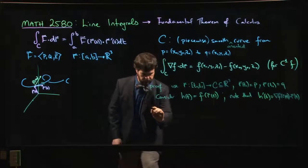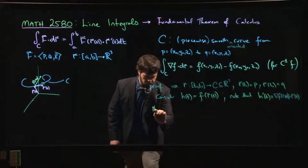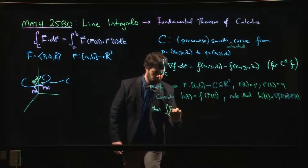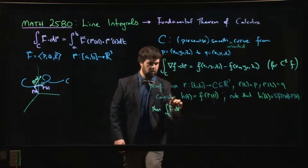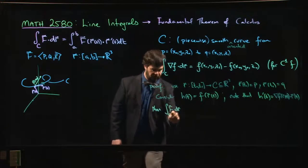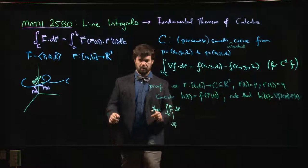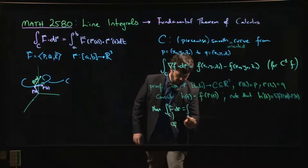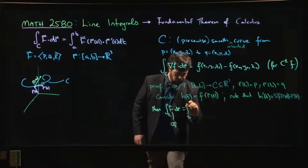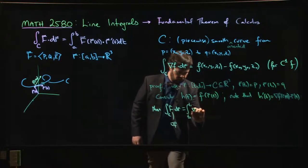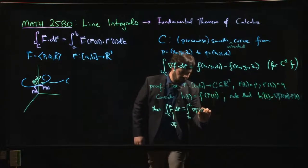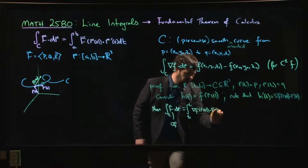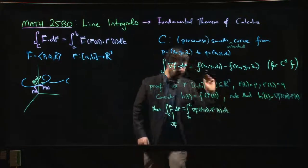We can say that the integral along C of f dot dr, where I guess I should say f is the gradient - sorry, I'm used to writing f all the time - so the integral of the gradient, this is going to be the integral, once we parameterize, integral from t0 to t1 of gradient of f at r of t dotted with r prime of t dt.